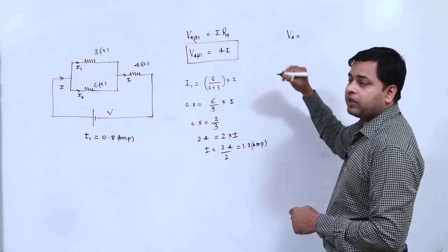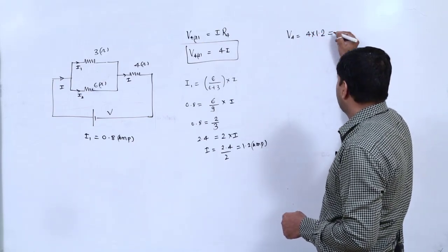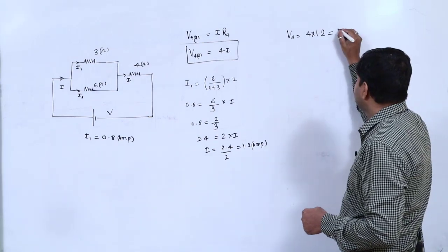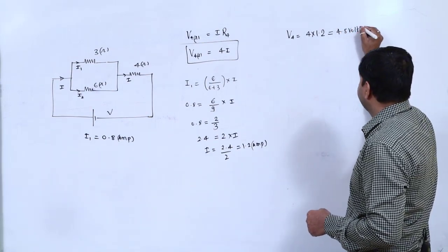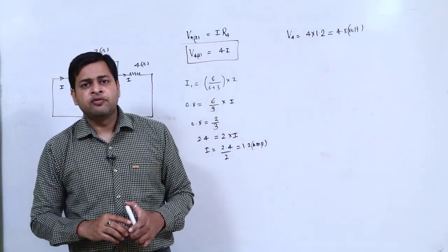So V4 equals how much? 4 multiply by 1.2. And 4 multiply by 1.2 gives you 4.8 volt. 4.8 volt. Your answer is 4.8 volt.